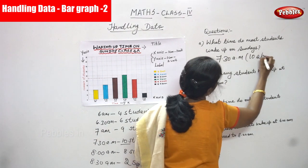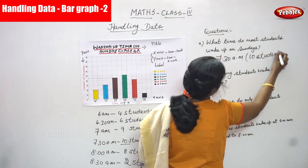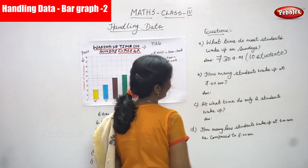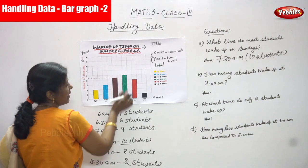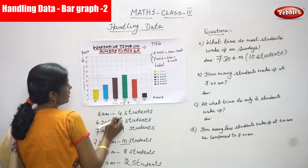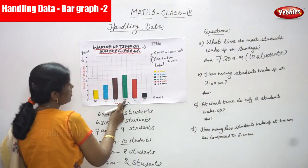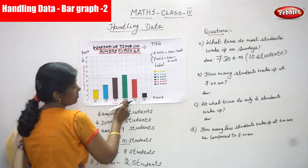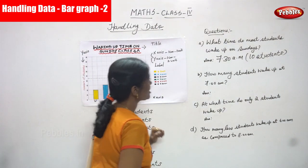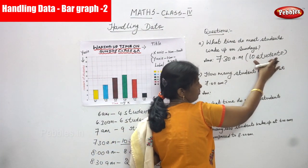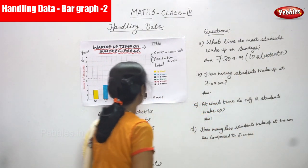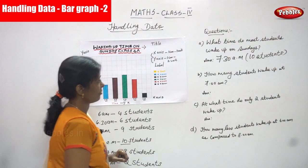Most of the students — the number of students is 10. At what time do most students wake up on Sunday? That means this vertical bar graph is the tallest. So that is 7:30 a.m. Most of the students wake up at 7:30 a.m. on Sunday. How many students? 10 students. So this is the highest number of students — most of the students wake up at 7:30 a.m. on Sunday, because this is a very tall bar.